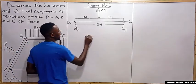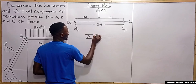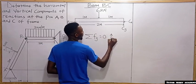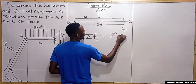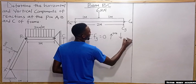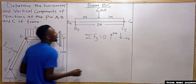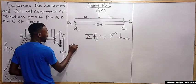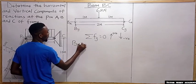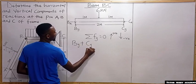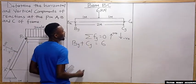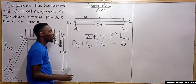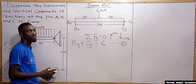Taking the summation of forces in the Y direction equal to zero, with upward forces positive and downward forces negative, we get: B subscript y plus C subscript y equals 6. We call this equation number one.